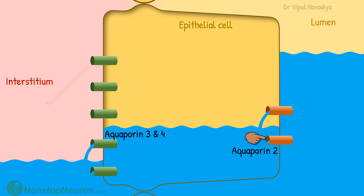In the absence of vasopressin, there are minimal aquaporins on the apical membrane, and most of them are stored on the membrane of the vesicle inside the cell, where they don't play any role in water reabsorption.